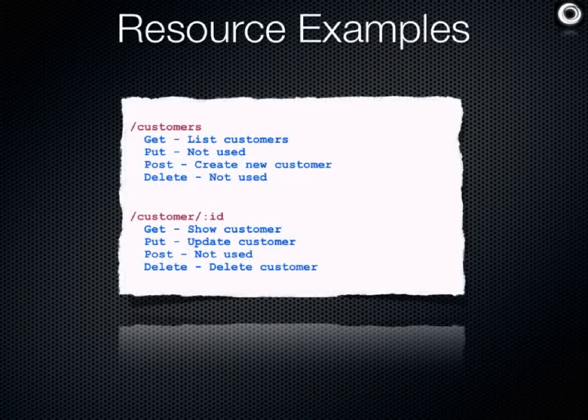Looking at example resources: slash customers can respond to GET to list customers, and POST to create a new customer. Then slash customer slash colon-id — where colon-id is a placeholder for a variable — responds to GET to show that customer, PUT to update that customer, and DELETE to delete the customer. This is a great place to start when defining the service you're going to expose.